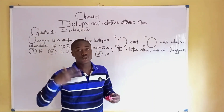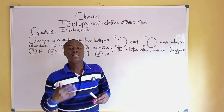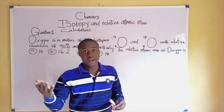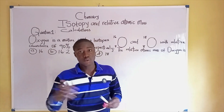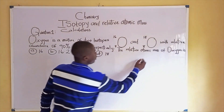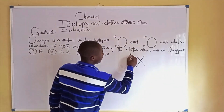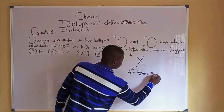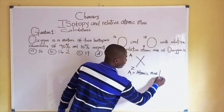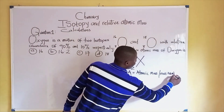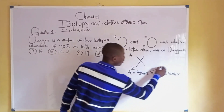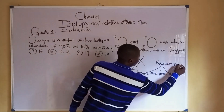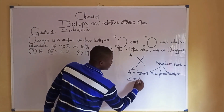First, we need to understand the term isotopy. Isotopy is simply a phenomenon whereby atoms of the same element have the same atomic number but different mass number. For example, we are given an atom X, where A is the atomic mass — also called mass number or nuclear number — and Z is simply the atomic number.